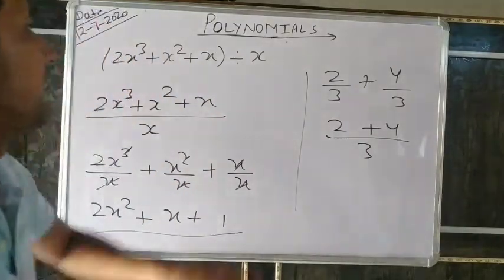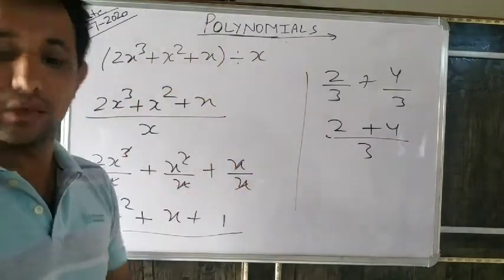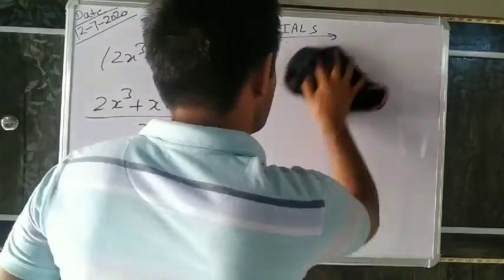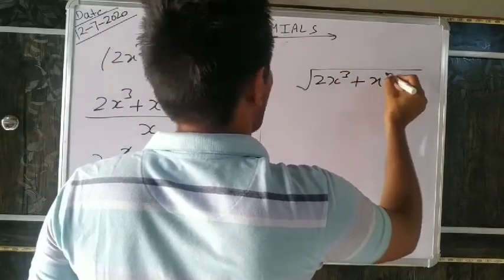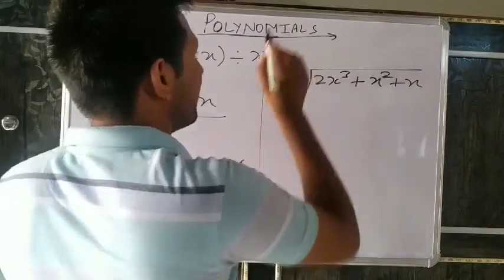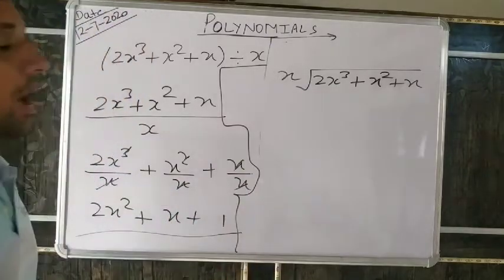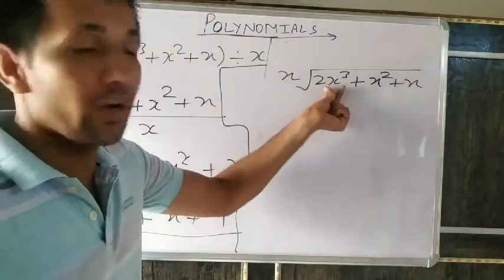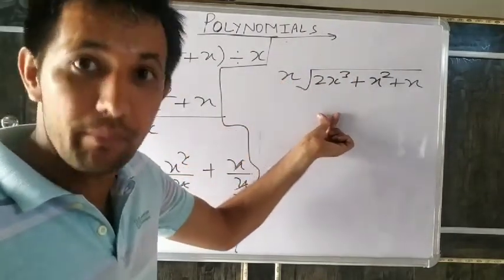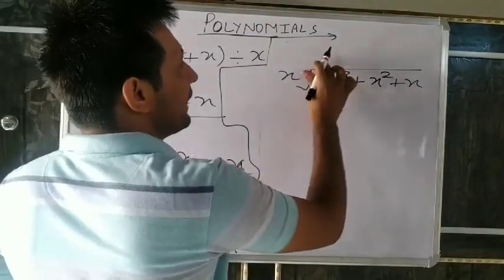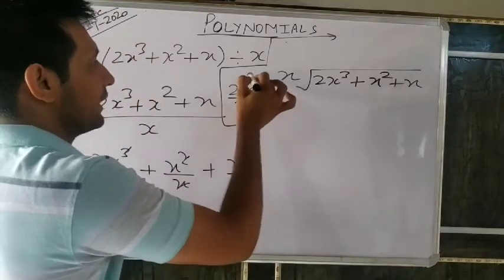The problem we face is when we divide a binomial by a binomial, a trinomial by a binomial, or a polynomial by a trinomial. In this case, how will we divide? Look at the same example: 2x³+x²+x divided by x. We will use the long division method. The divisor x divides the first term 2x³. We write a number in the quotient — when we multiply it by the divisor, it gives back the same first term.